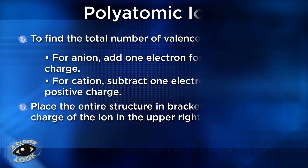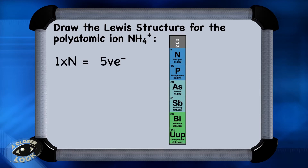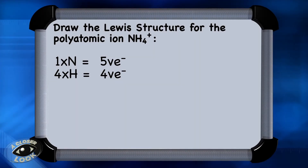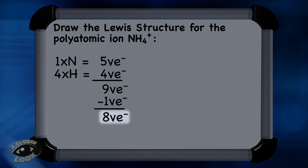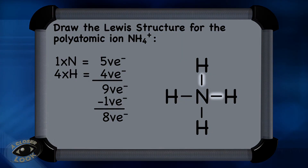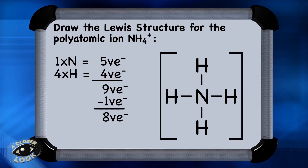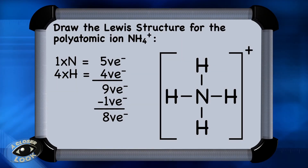Let's look at some polyatomic ions. The first example is ammonium, NH4+. There is one nitrogen in group 5, contributing 5 valence electrons. There are 4 hydrogens, each contributing 1 electron, for a total of 4 electrons, giving an overall total of 9. However, notice the charge of plus 1 — so subtract 1 electron, bringing the total to 8 valence electrons. Put nitrogen central, arrange the other elements symmetrically, then place single bonds: 2, 4, 6, 8. Place the whole Lewis structure in brackets with a plus 1 charge in the upper right-hand corner.